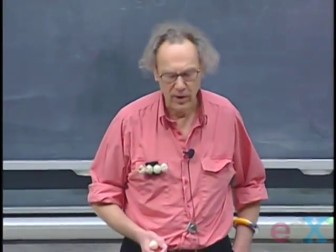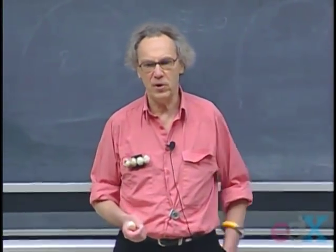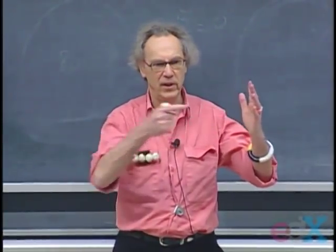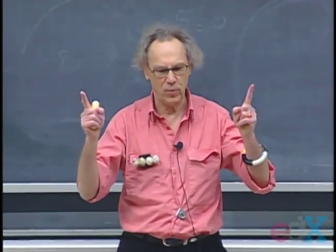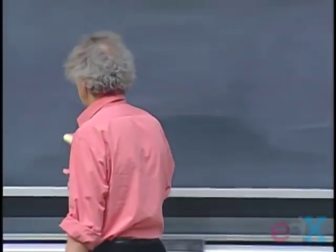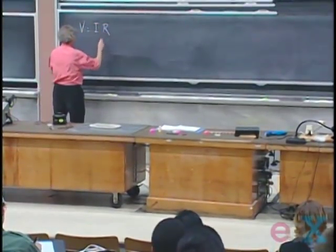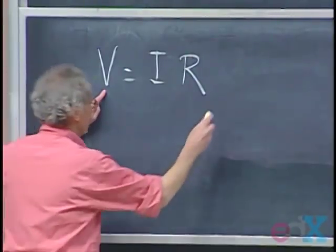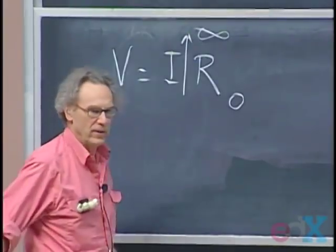No electric field can exist in a superconductor. And you can very easily see that, because if there were an electric field, if this is a superconductor, and there is an electric field in this direction, there would be a potential difference over the superconductor. And Ohm's law, V equals IR, tells you then immediately that if this is not zero, but if this is zero, that I would go to infinity. So you cannot have any electric field in a superconductor.